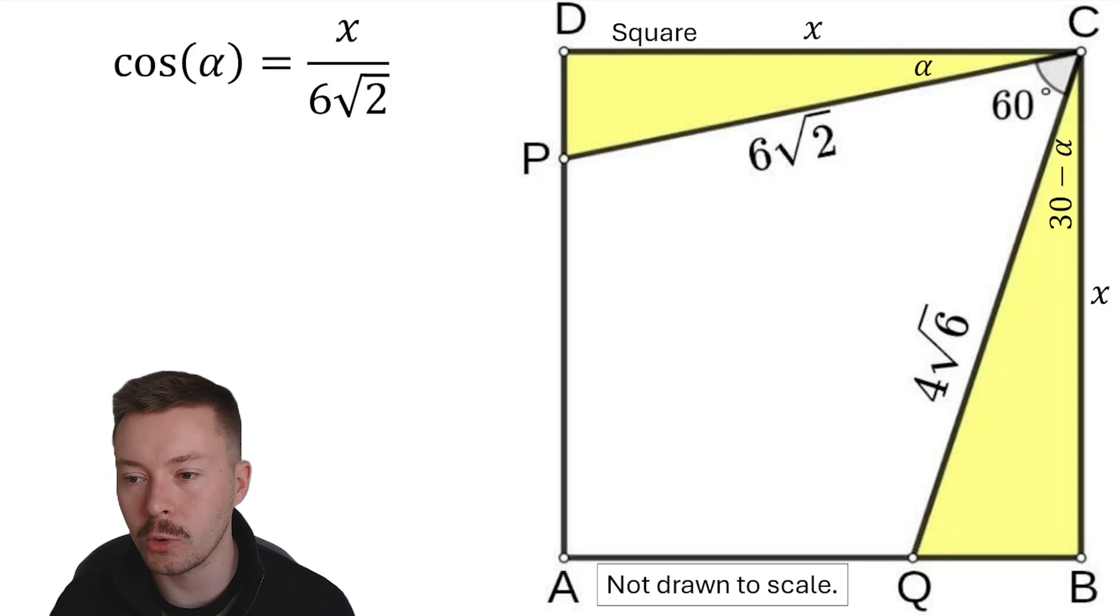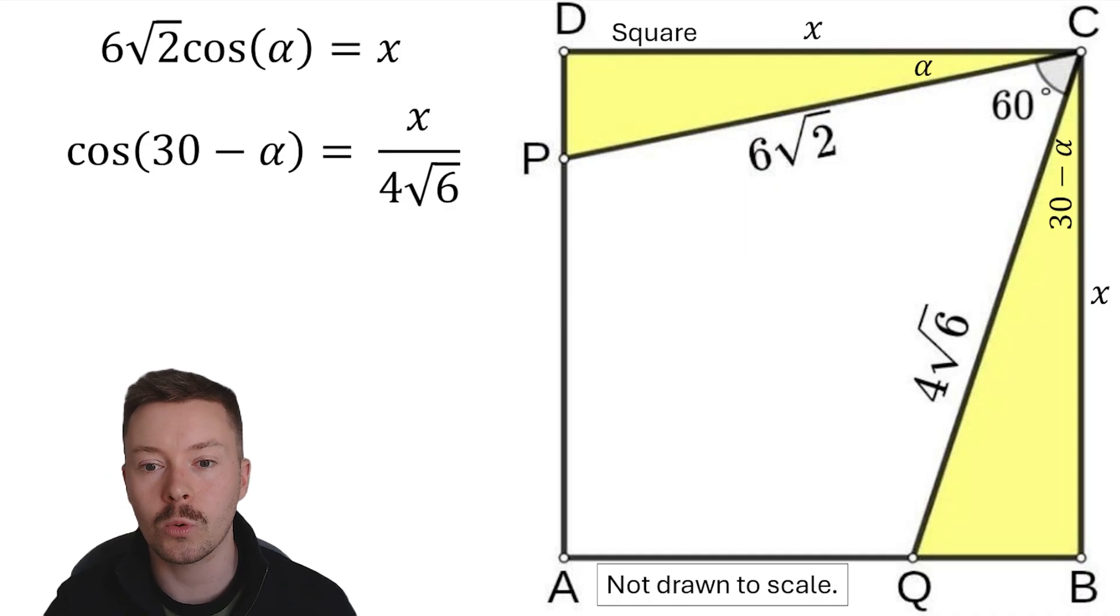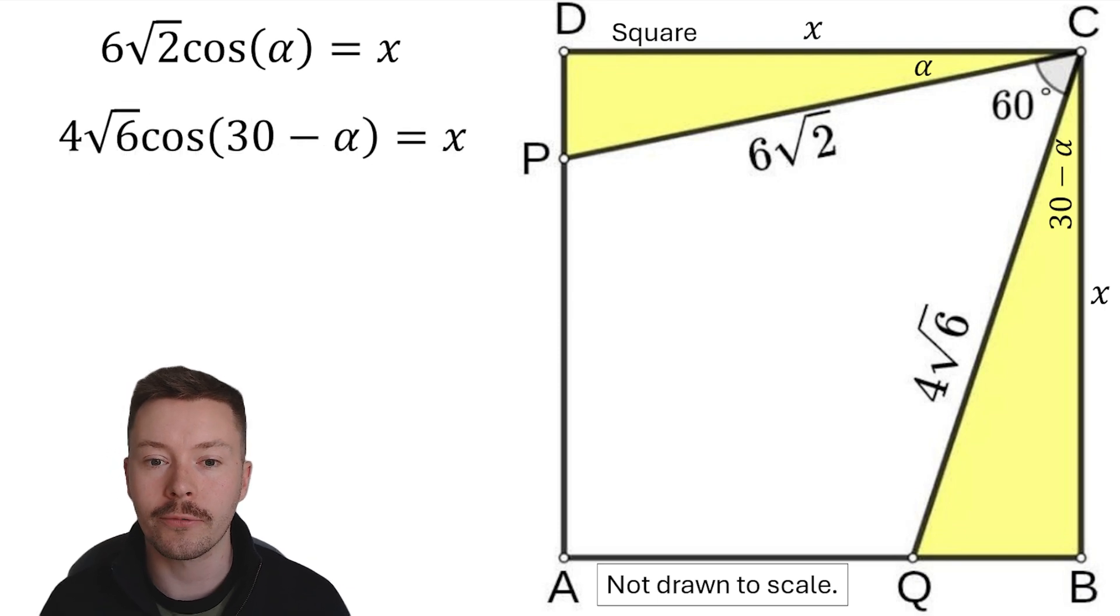By the same token, using the same method with triangle BCQ, I'm going to rearrange that quickly. Using the same method, I'm going to get cos of 30 minus alpha is equal to x over 4 root 6, and I'm going to multiply by that denominator there to get 4 root 6 cos 30 minus alpha equals x.